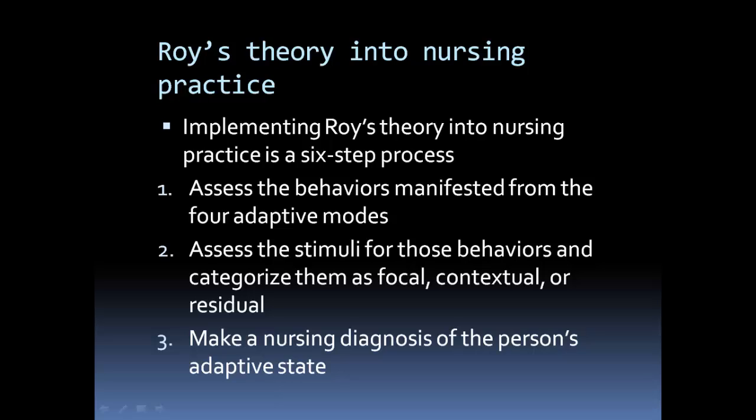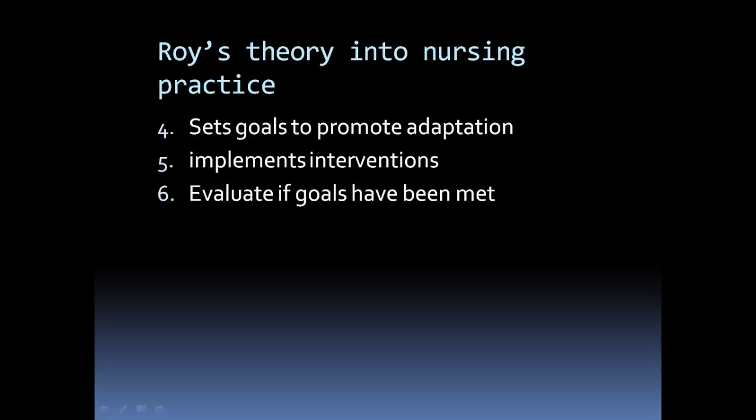To take Roy's theory into nursing practice, she has a six-step process. The first is assessing the behavior manifested from the four adaptive modes. The second is to assess the stimuli for these behaviors and categorize them as focal, contextual, or residual. The third is to make a diagnosis. The fourth is goals. The fifth is to implement the interventions. And the sixth is to evaluate whether the goals have been met.